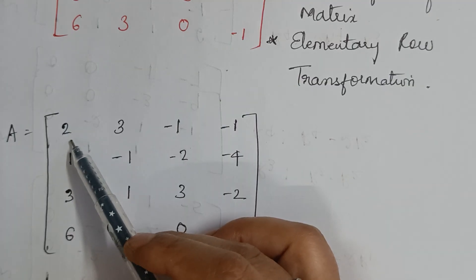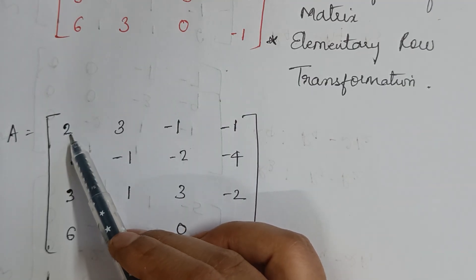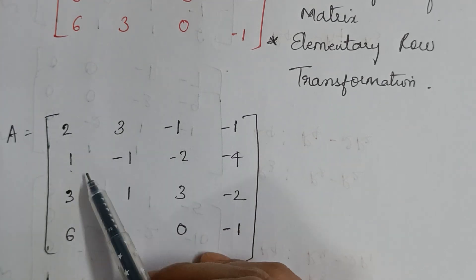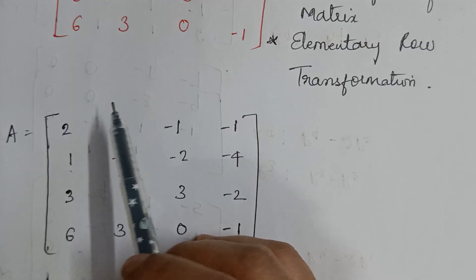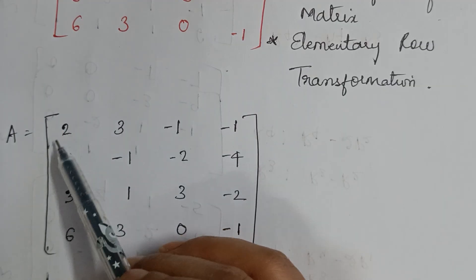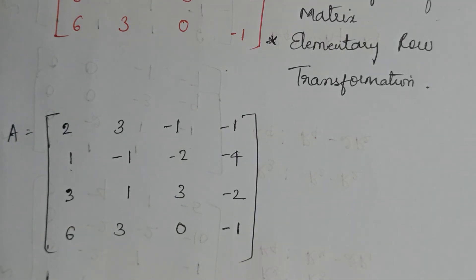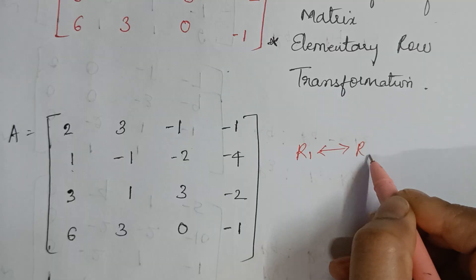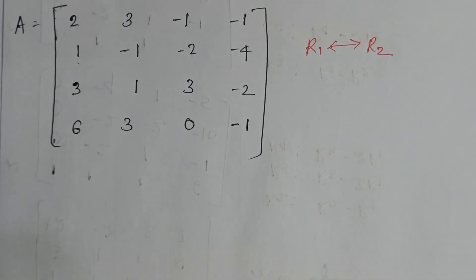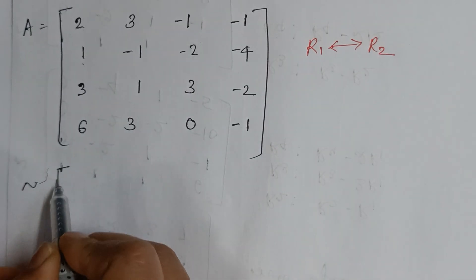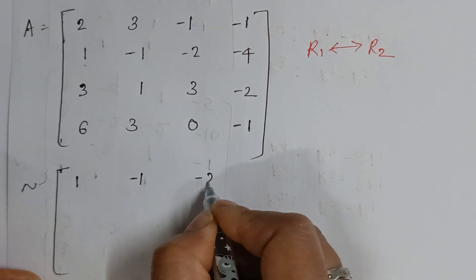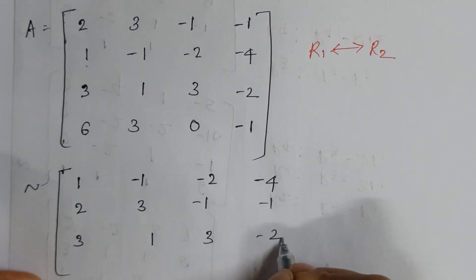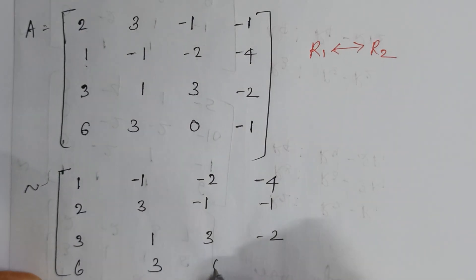The rule of echelon form is that the first element of the first row in the first column has to be 1. But here we have 2. However, if we look at the next row, the first element of the second row and first column is 1. So I can simply interchange the rows. I'll interchange row 1 with row 2. After doing this, the matrix becomes: 1, -1, -2, -4 / 2, 3, -1, -1 / 3, 1, 3, -2 / 6, 3, 0, -1.